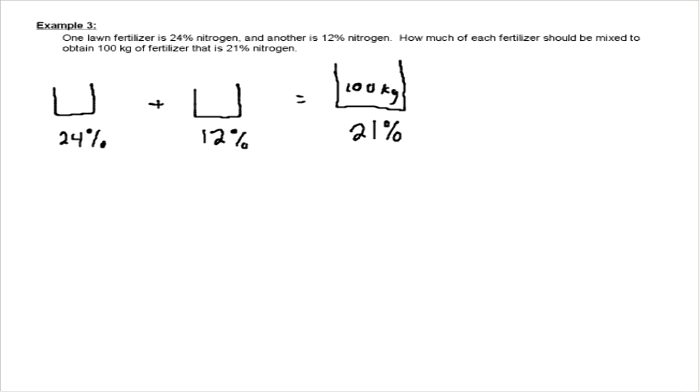Now looking at this problem right away, the unknowns are the amounts in each of the buckets. So we don't know how much is in the first bucket, so let's just call it bucket X. And we don't know how much is in the second bucket, so let's just call it bucket Y.